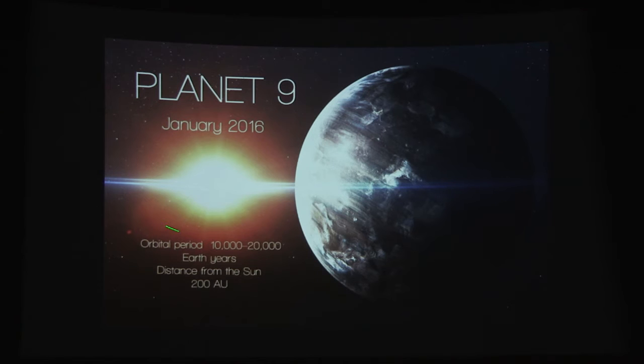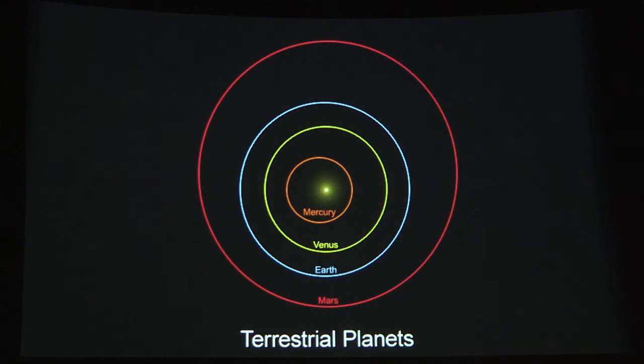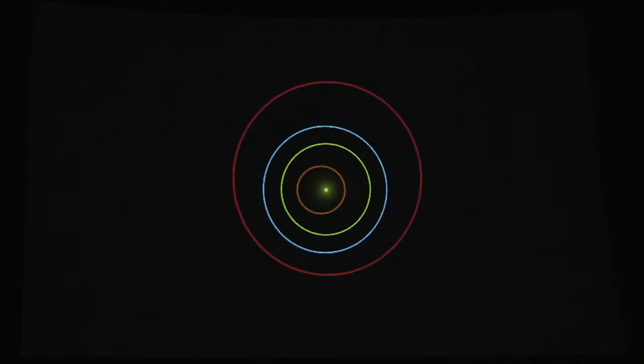At that time, the orbital period is about 10 to 20,000 years. It has to have a mass of about 10 times that of Earth and orbits about 200 AU. Astronomical units, the distance between the Earth and the sun is 1 AU.